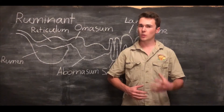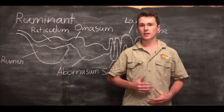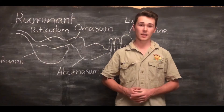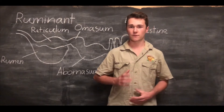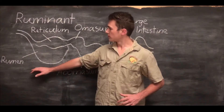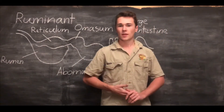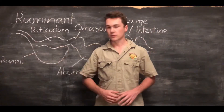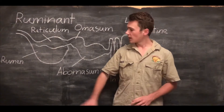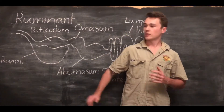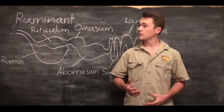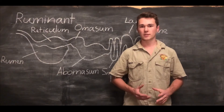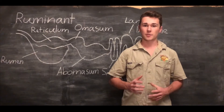Digestion for ruminant animals is quite similar to monogastrics, however there are some key important features which separate the two digestive systems. The main difference is that the ruminant digestive system has four stomachs: the rumen, reticulum, omasum and abomasum. Similar to monogastric systems, food enters through the oesophagus, but different to monogastrics it enters into the rumen first. The rumen is one of the most important features of the ruminant digestive system, as it is the main area which breaks down much of the cellulose and plant matter these animals eat.